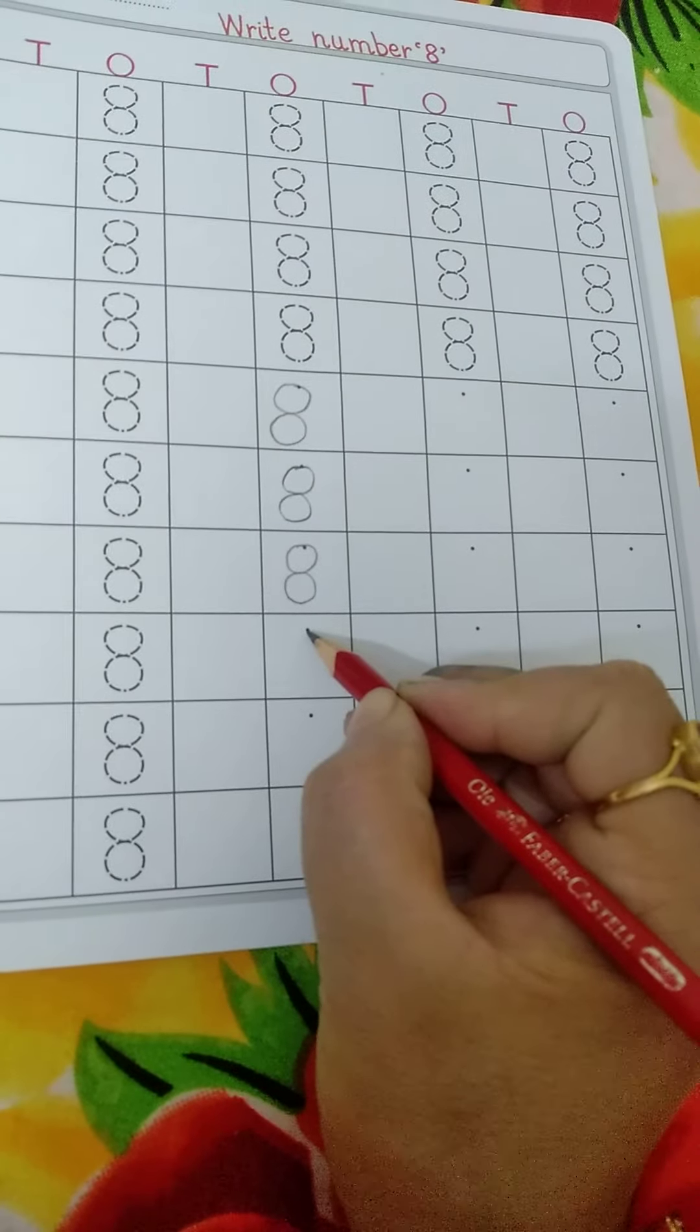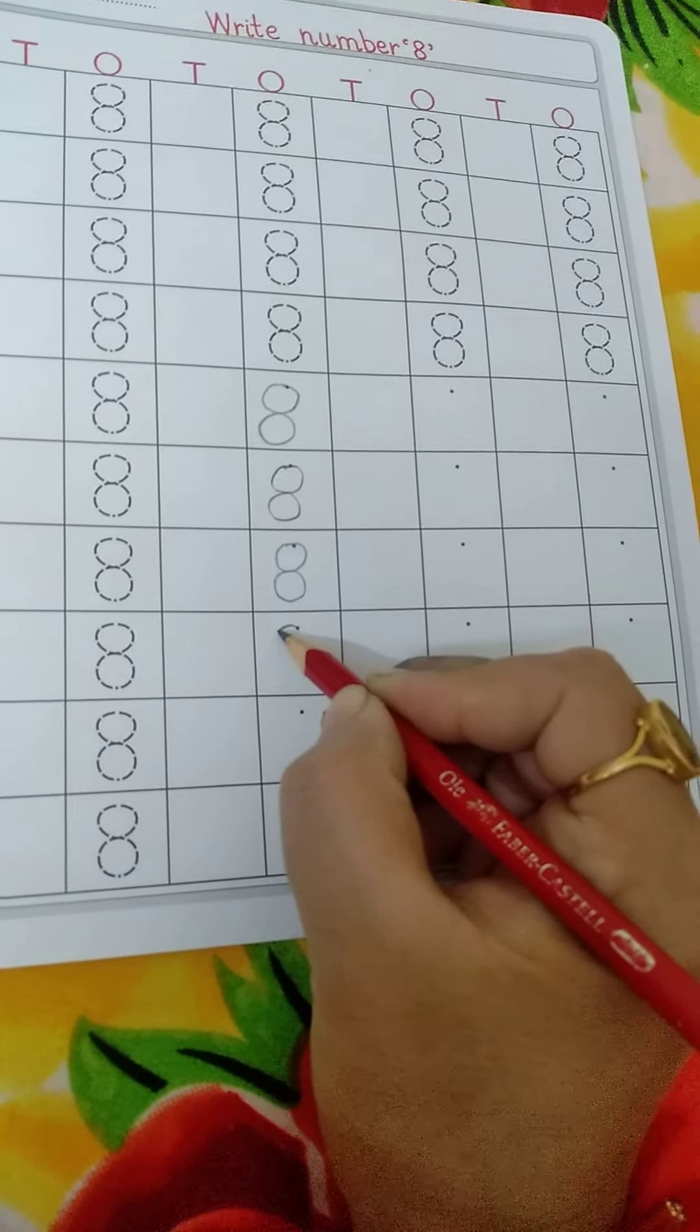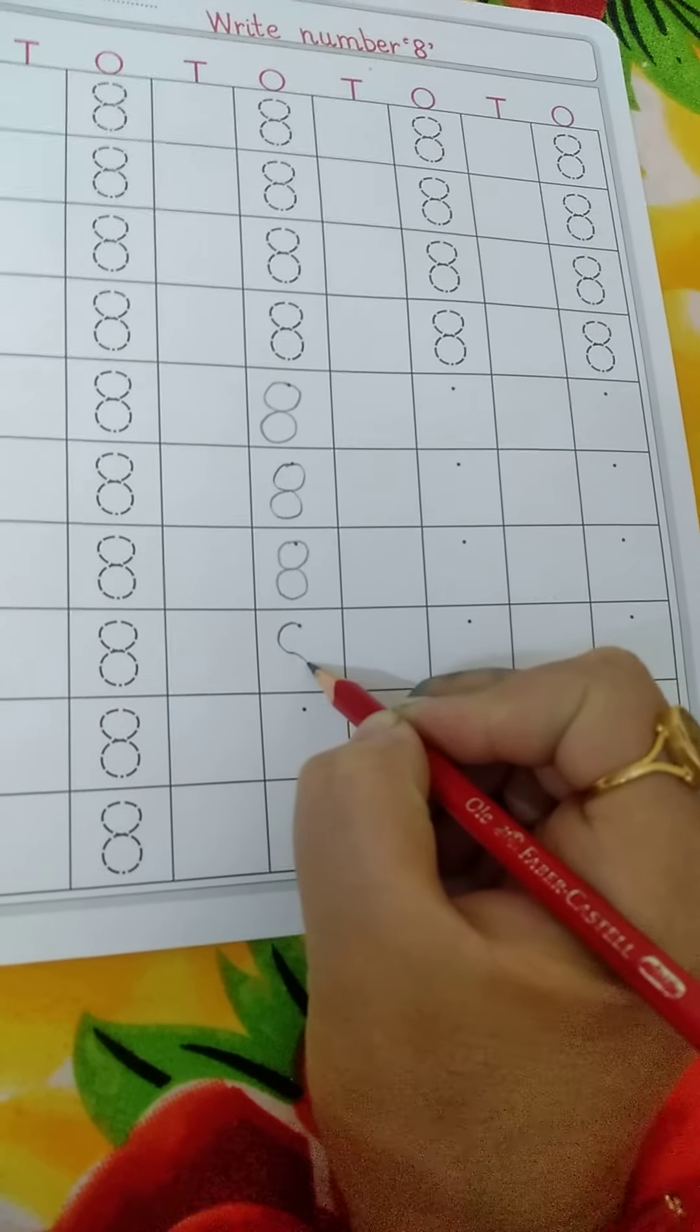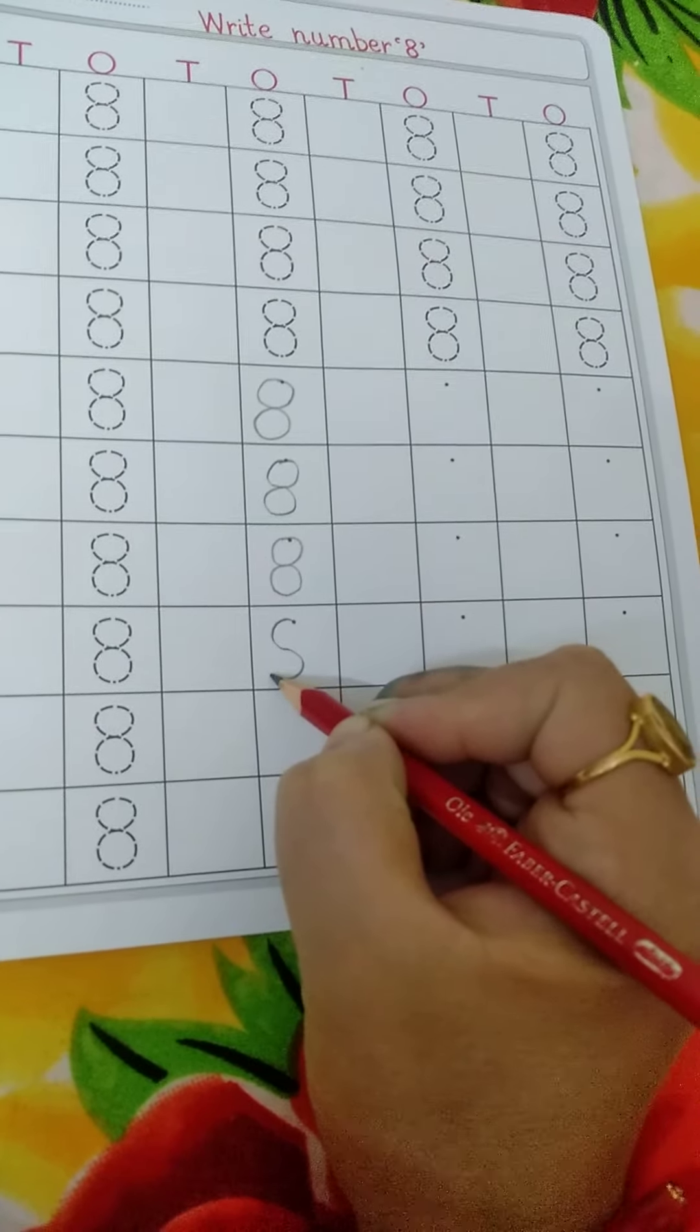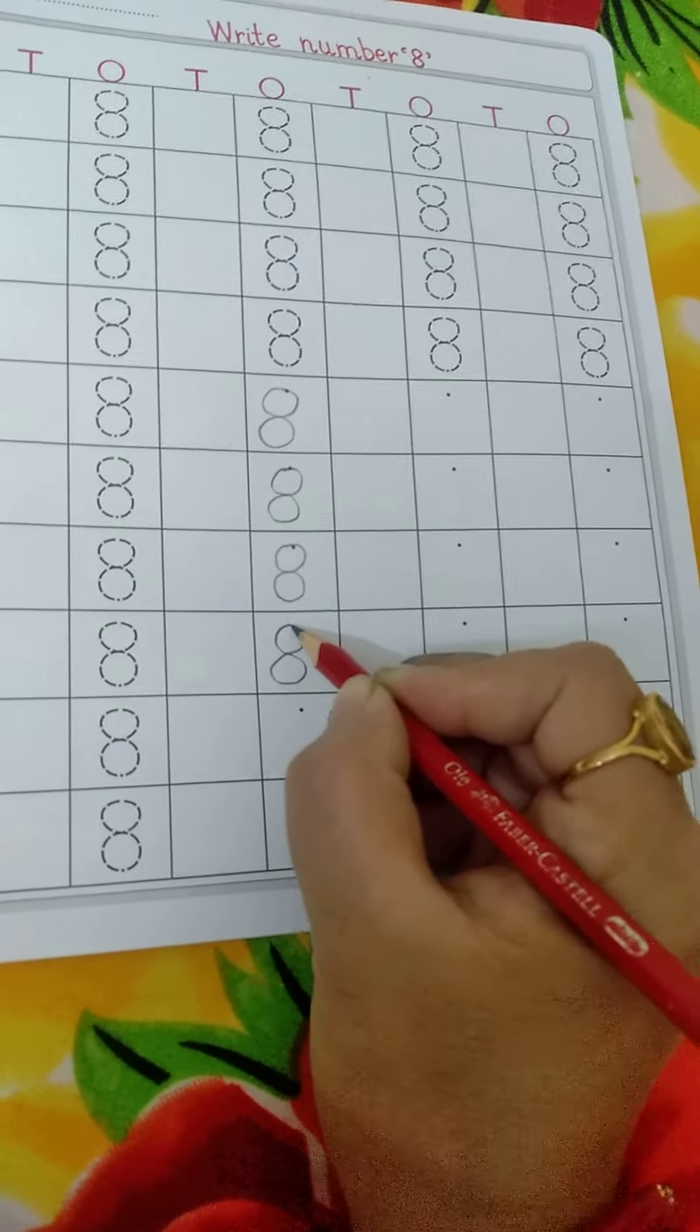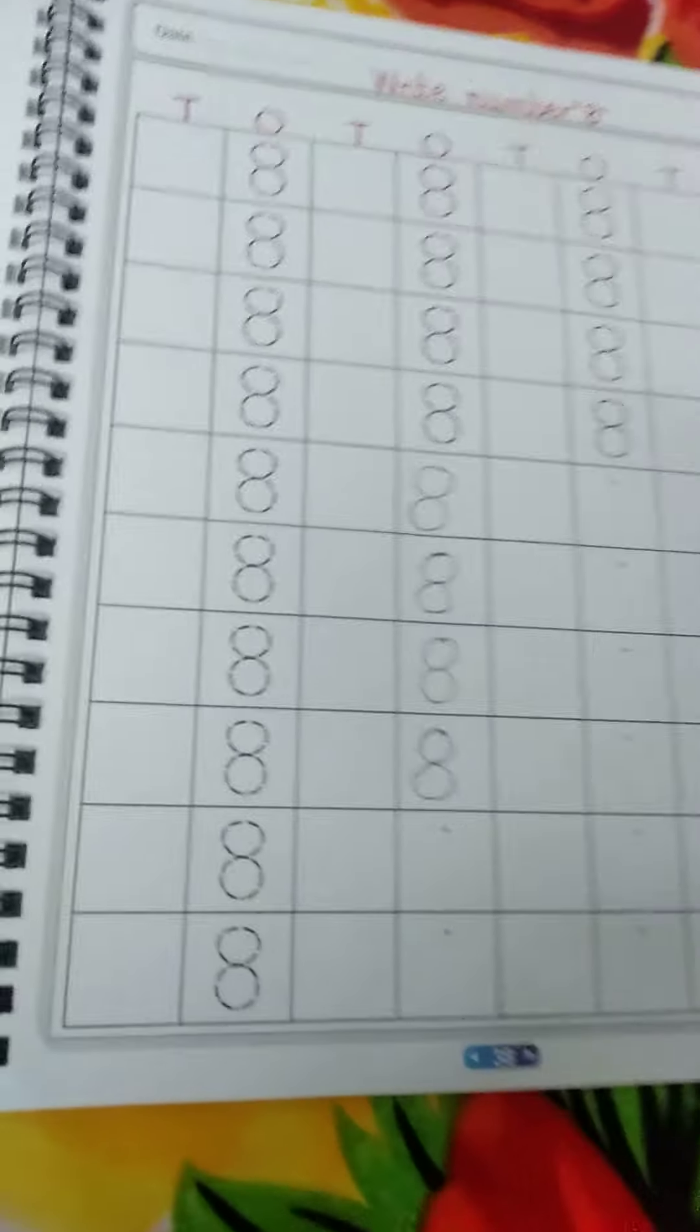Again, one time more. Left curve down, right curve down, left curve up, right curve up. Make 8. Write 8, all of you. Left curve down.